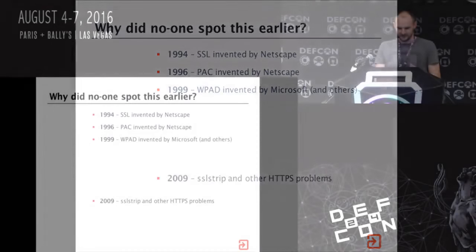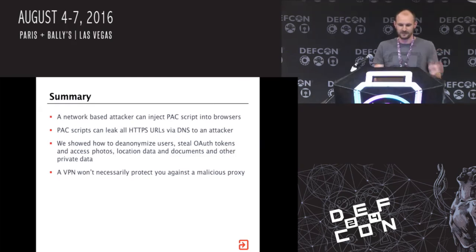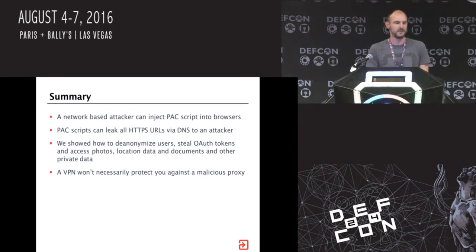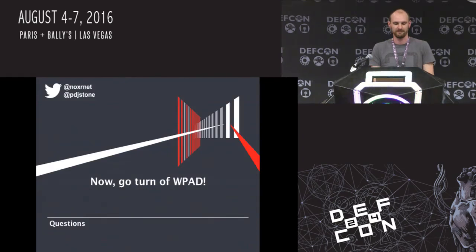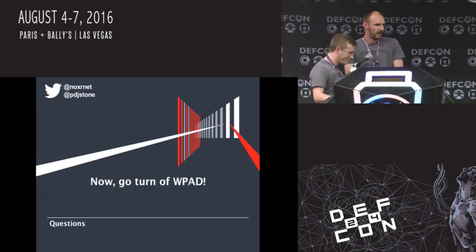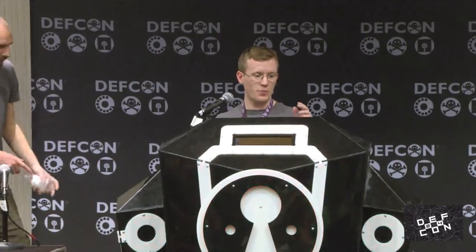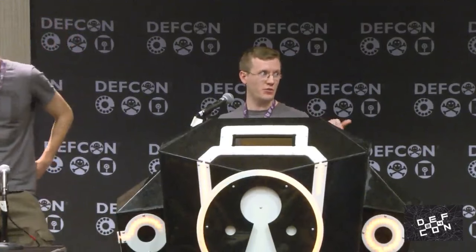To summarize: network-based attackers can inject PAC scripts into browsers. PAC scripts can leak all HTTPS URLs via DNS to an attacker, at least on unpatched systems. We've showed how to de-anonymize users, steal OAuth tokens, access photos, location data, and documents. A VPN won't necessarily protect you against a malicious proxy. Now go turn off WPAD. We're going to be releasing all the code for all the demos as soon as we get back home and have had some sleep - it will be on GitHub. Watch our Twitter feeds and we'll let you know when we've released it.